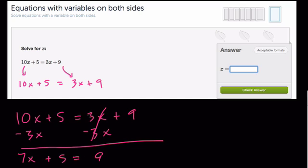I could have done it the other way, but 3x minus 10x would give me a negative number, and that would require the last step to divide or multiply by a negative value. It's just one extra step.